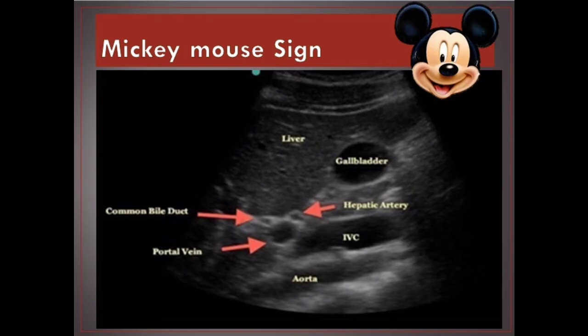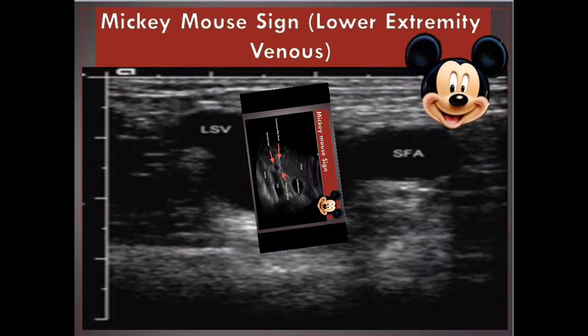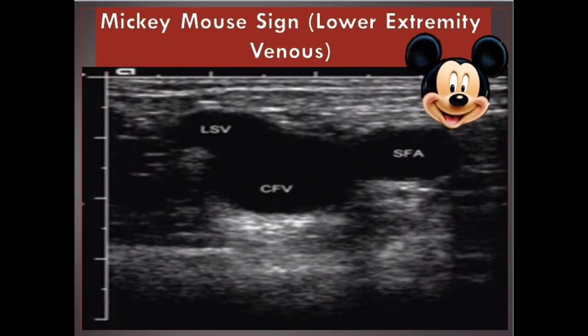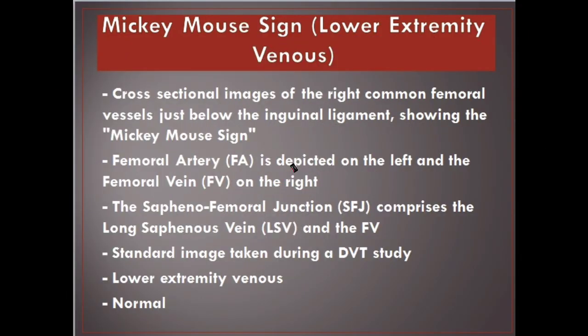Mickey Mouse sign. It represents the appearance of the portal vein, common bile duct, and hepatic artery. Also used for lower extremity venous imaging — cross-sectional images of the right common femoral vessels just below the inguinal ligament showing the Mickey Mouse sign. The femoral artery is depicted on the left and the femoral vein on the right. The saphenofemoral junction comprises the long saphenous vein and the femoral vein, as seen in a standard image taken during a DVT study.